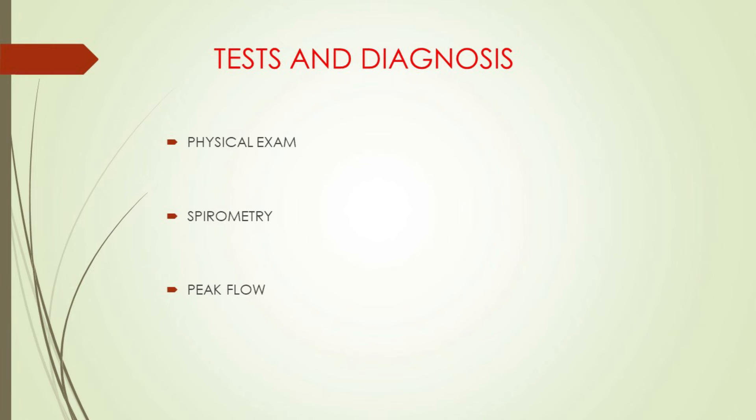Peak Flow. A peak flow meter is a simple device that measures how hard you can breathe out. Lower than normal peak flow readings are a sign your lungs may not be working as well and that your asthma may be getting worse.